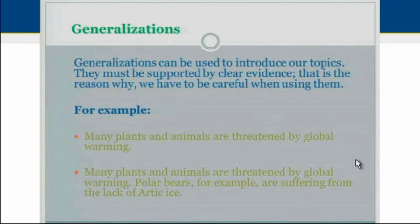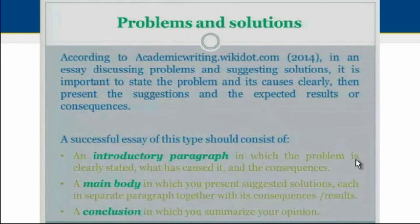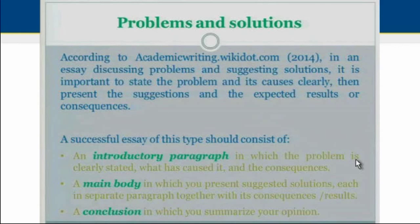Another topic you will find in your textbook is about problems and solutions. In an essay discussing a problem and suggesting solutions, it is important to state the problem and its causes clearly, then present suggestions and expected results or consequences. A successful essay of this type should consist of: an introductory paragraph in which the problem is clearly stated along with its causes and consequences; a main body in which you present suggested solutions, each in a separate paragraph, together with its consequences or results; and a conclusion in which you summarize your point of view.